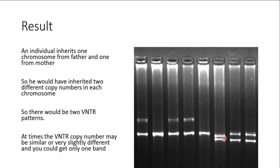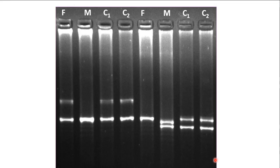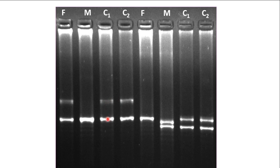Here you can see two distinct bands. Now how do we use VNTR analysis in paternity testing? We extract DNA from the father's blood, the mother's blood, and the child's blood, then analyze the VNTR patterns. In this example, the father shows two VNTR patterns, the mother shows one pattern, and the child shows both patterns — one corresponding to the father and one corresponding to the mother — confirming this child is a biological child of these two parents.